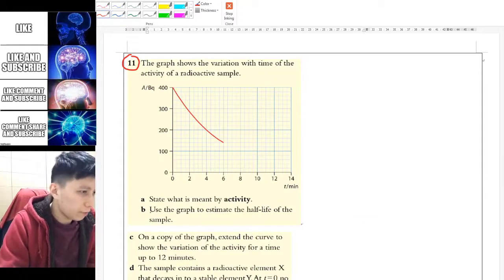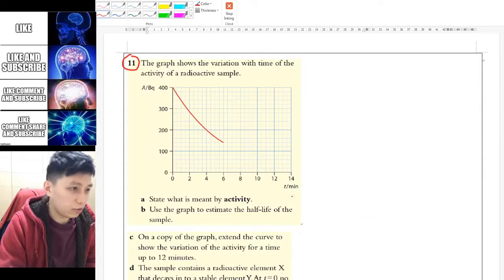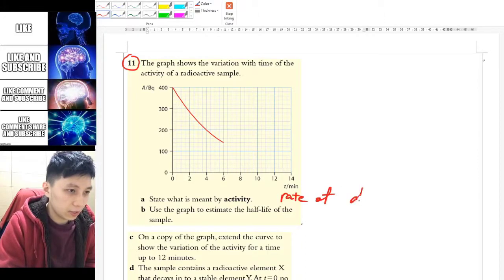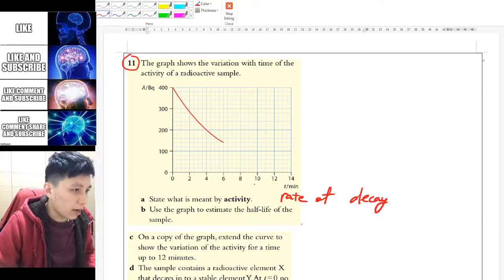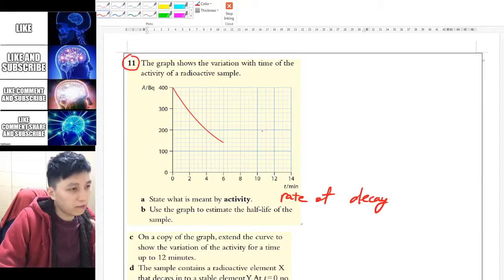Question 11. First part, asking you what it means by activity. So simply, like I said, it is the rate of decay. How fast is decaying. Part B, use a graph to estimate the half-life of the sample. So here you got the graph of the activity.